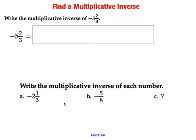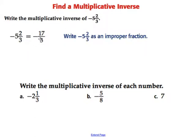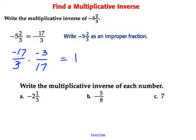So if we want to find a multiplicative inverse, when we have a mixed number, we need to turn that into an improper fraction. So negative 5 and 2 thirds would be negative 17 thirds as an improper fraction. And then what you're going to do is multiply by the multiplicative inverse. So if I have negative 17 thirds, I would multiply by negative 3 seventeenths. When I multiply those, the 3s cancel and the 17s cancel, giving me 1. So the multiplicative inverse would be negative 3 seventeenths.